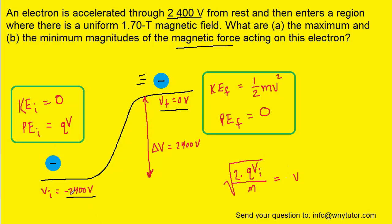Now, as noted, the initial electric potential we can assume to be negative 2,400 volts. The charge on an electron is a known value, right? It's negative 1.6 times 10 to the minus 19th coulombs. And the mass of an electron is also known to be 9.11 times 10 to the minus 31 kilograms.